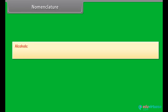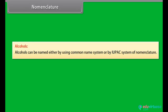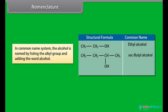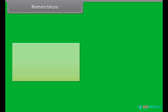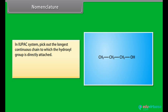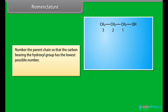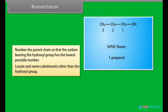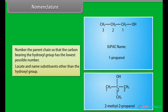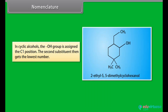Nomenclature — Alcohols. Alcohols can be named either by using the common name system or by the IUPAC system of nomenclature. In the common name system, an alcohol is named by listing the alkyl group and adding the word alcohol. In the IUPAC system, pick out the longest continuous chain to which the hydroxyl group is directly attached. Drop the -e ending and add -ol. Number the parent chain so that the carbon bearing the hydroxyl group has the lowest possible number. Locate and name substituents other than the hydroxyl group. Example: 2-methyl-2-propanol.